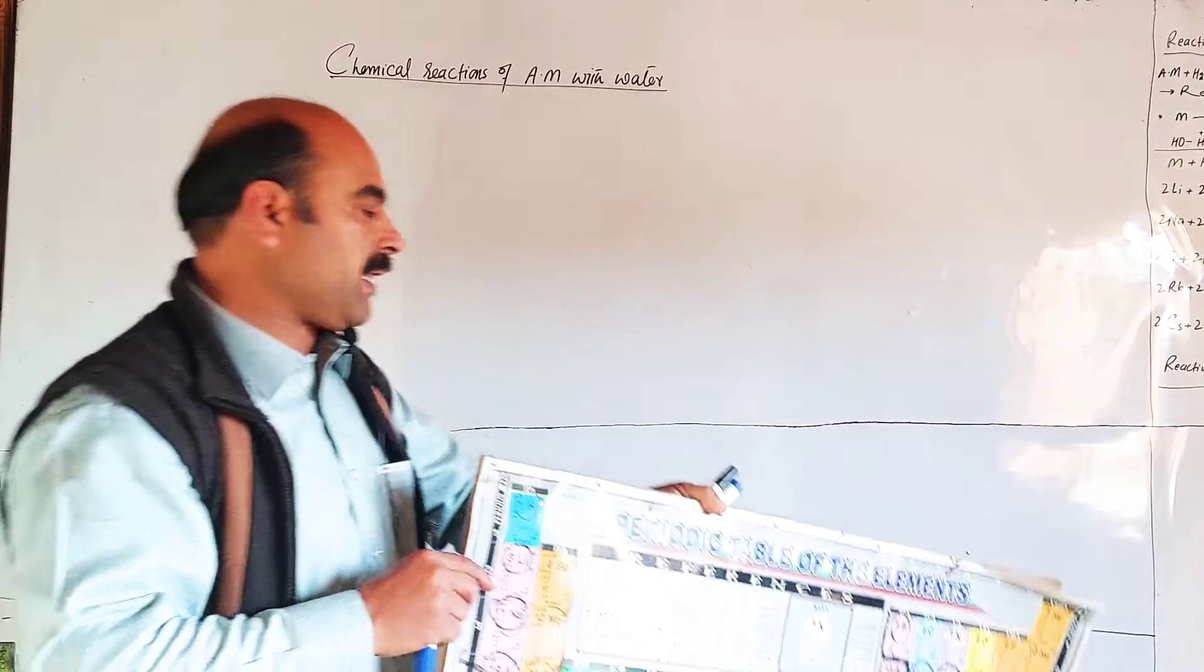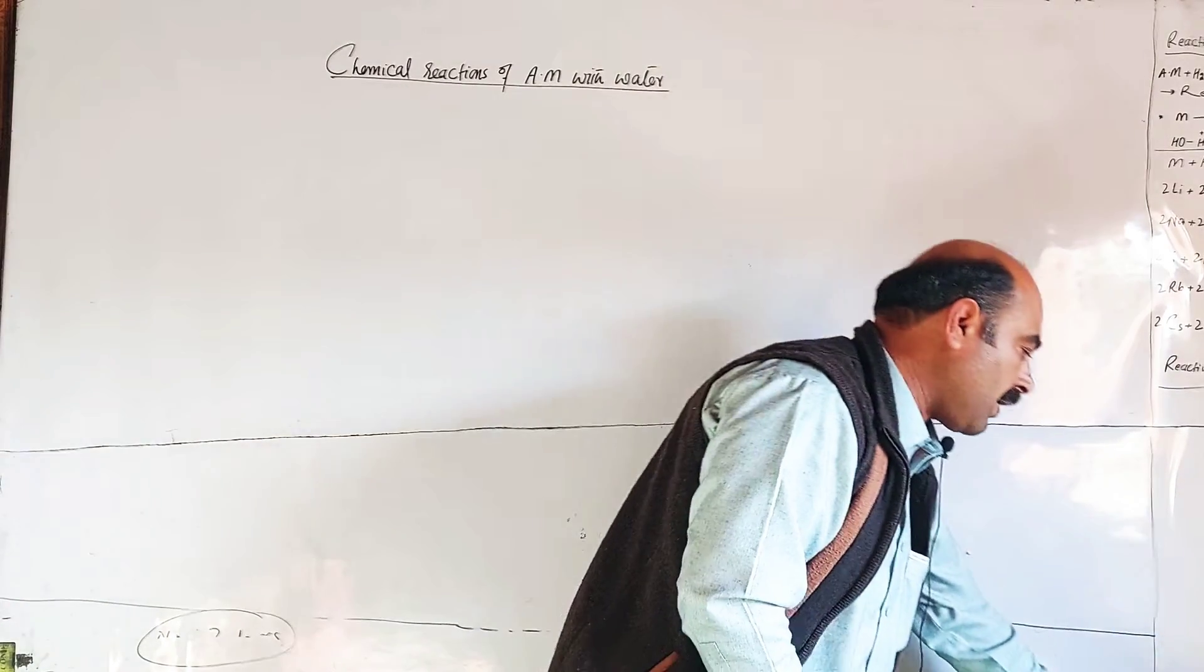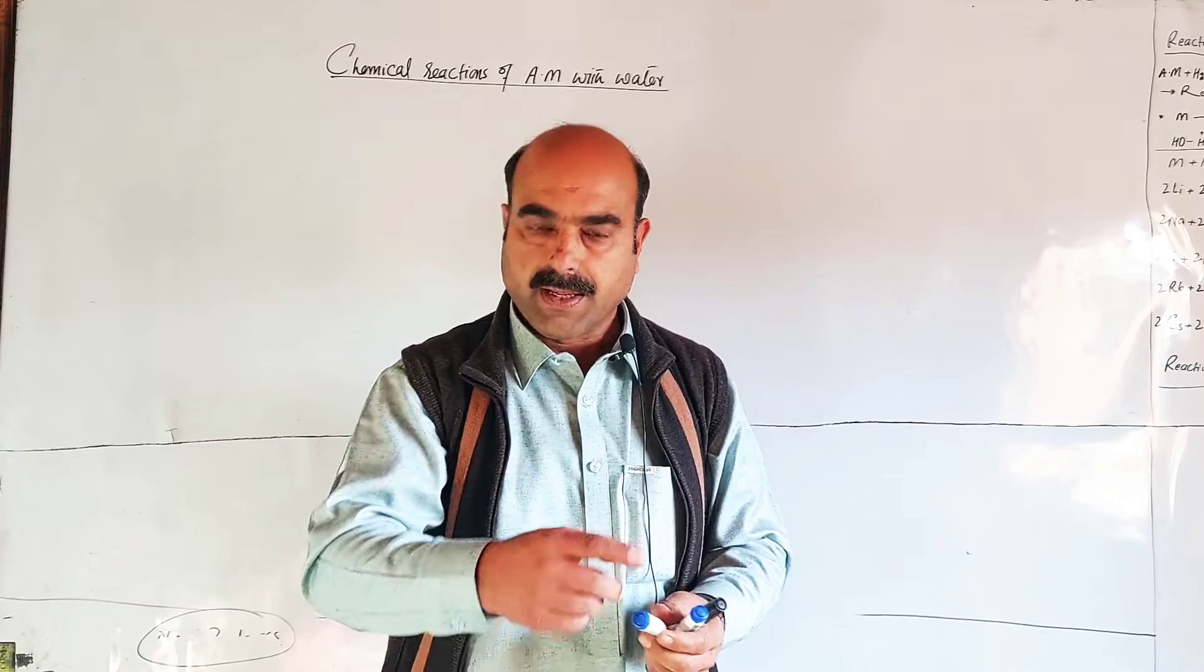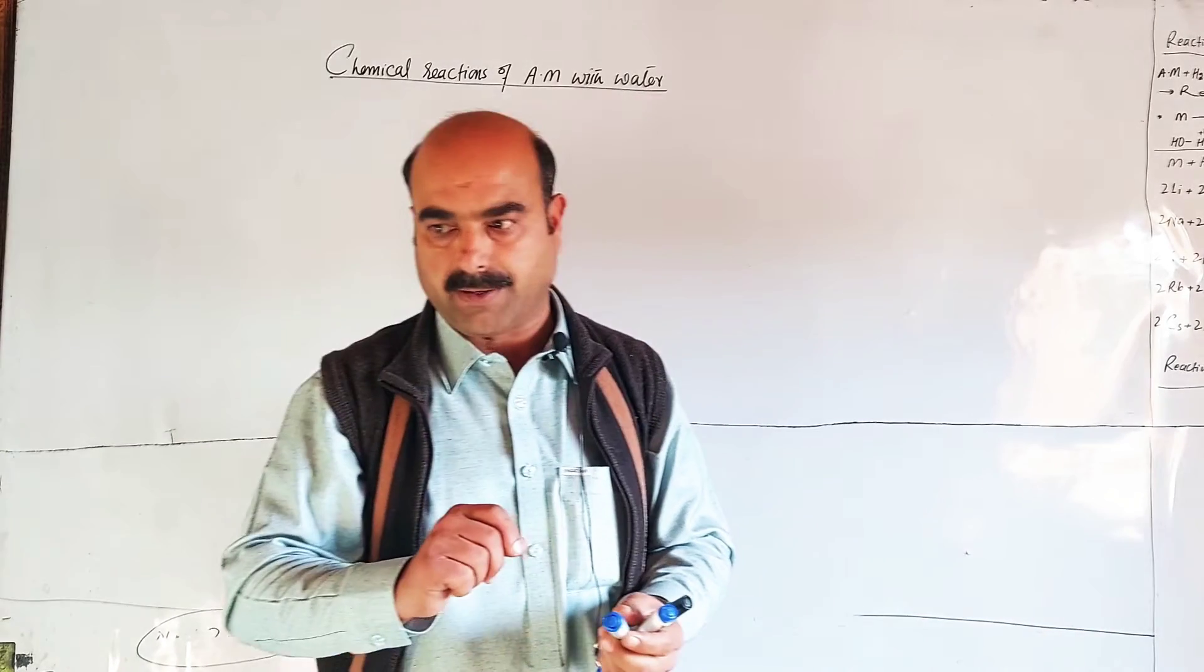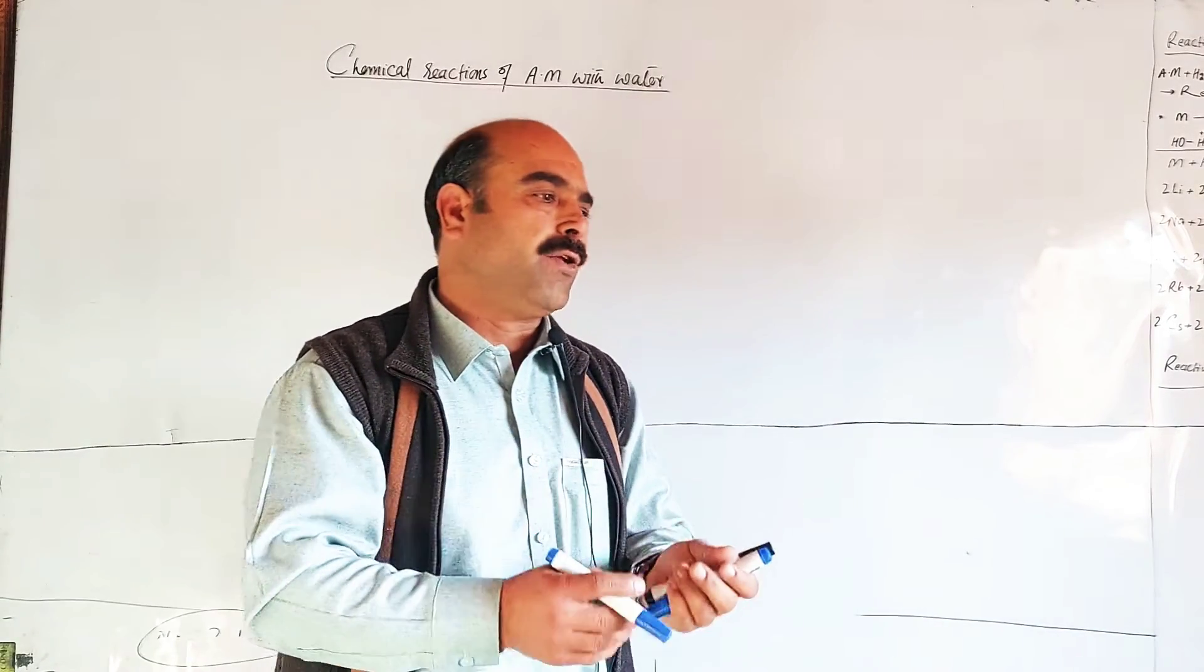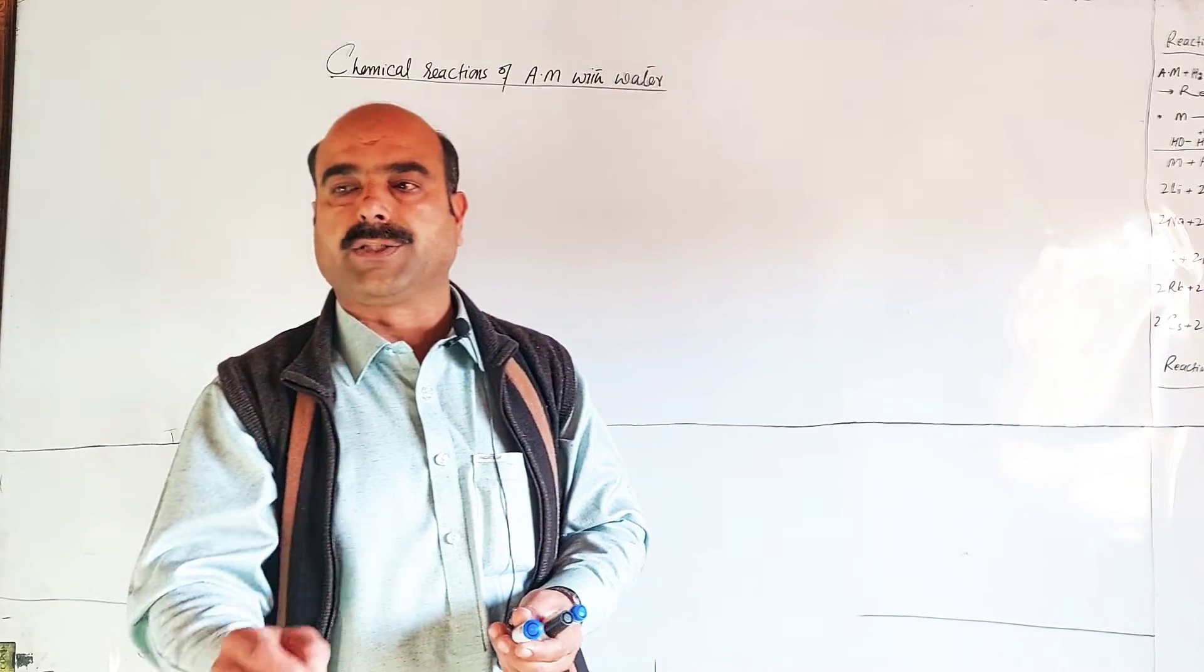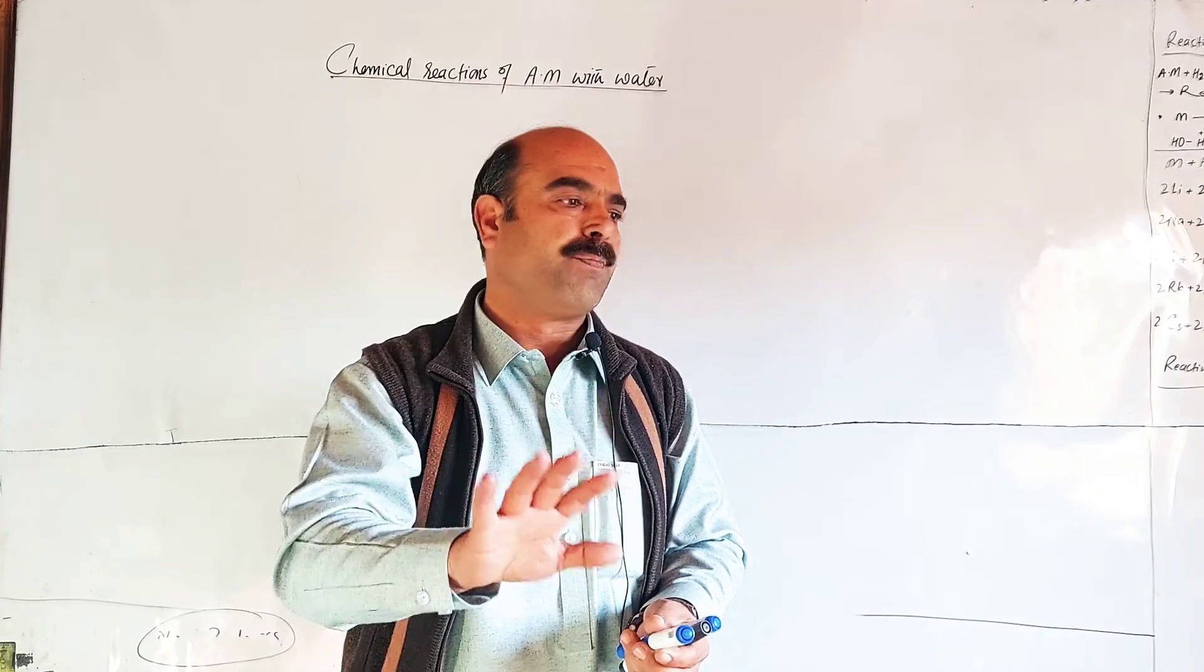Larger size means the valence electrons and the nucleus distance is greater. The attraction is less. These are more electropositive among their respective periods.